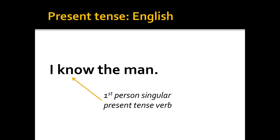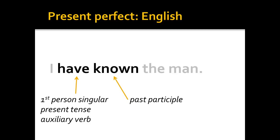The sentence on the screen, 'I know the man,' is in the present tense, reporting on an action happening right now. The subject 'I,' first person singular personal pronoun, agrees with the verb — a first person singular present tense verb. Now, if I want to take this present tense sentence and change it into the present perfect, I'll need to do two things. First, the verb 'know' needs to be changed into the past participle — so 'know' becomes 'known.' The second thing is, I still need a verb that agrees with the subject of the sentence. I'm going to use the first person singular present tense auxiliary verb 'have.' So: 'I have known the man.'